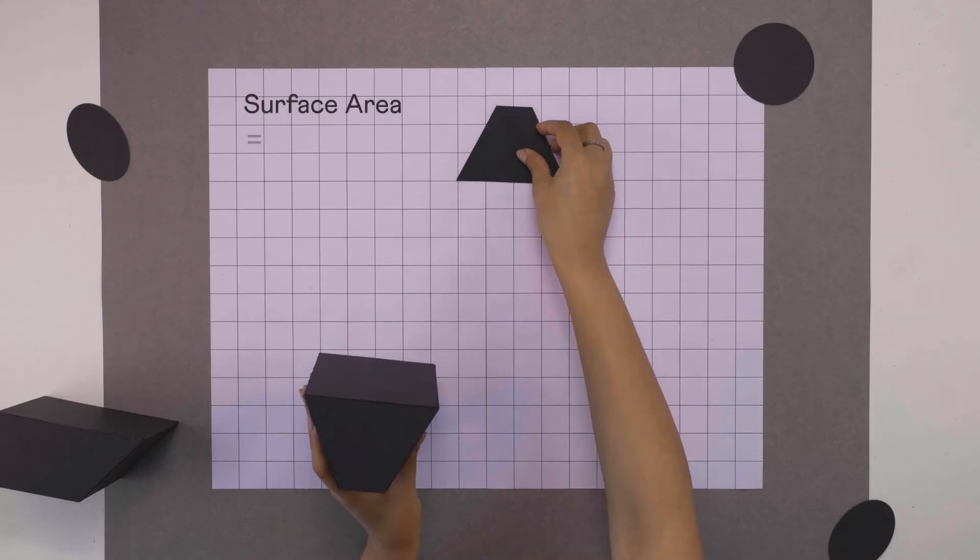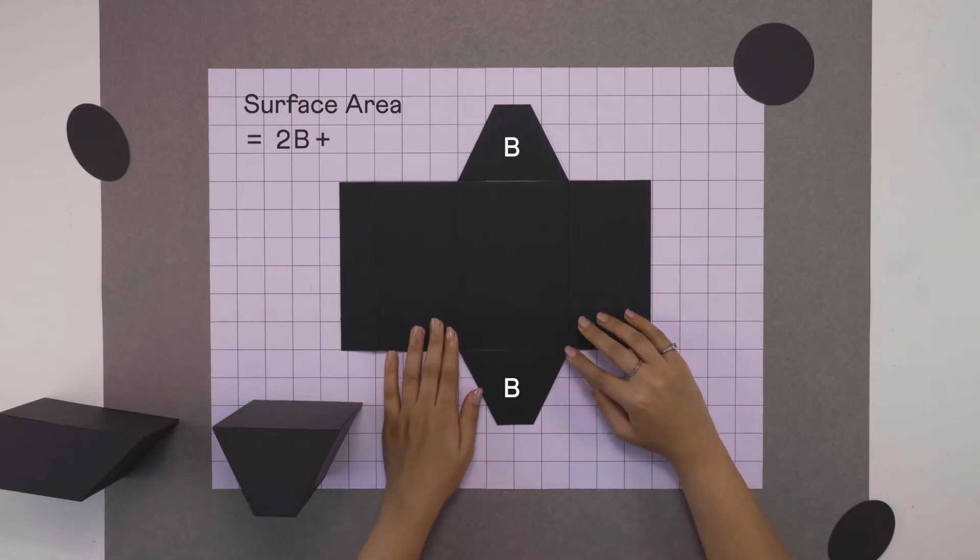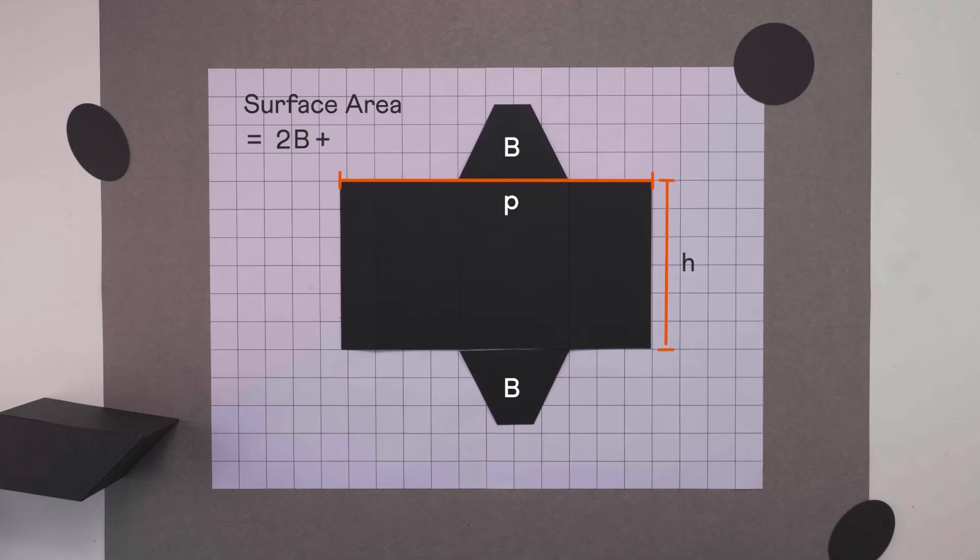We can find the surface area of any prism similarly. It's twice the area of the base plus the area of the unfolded rectangle, which is the product of the base perimeter and the height of the prism.